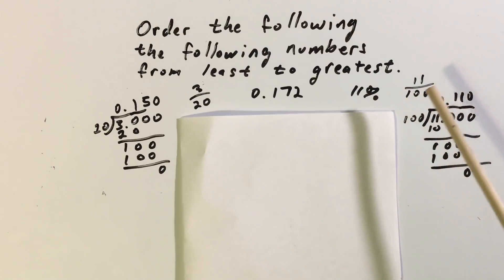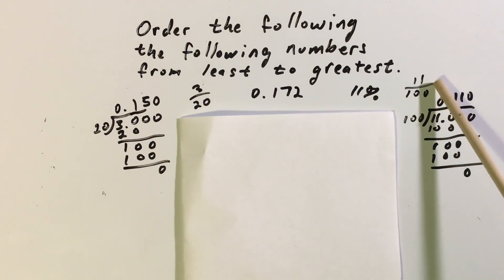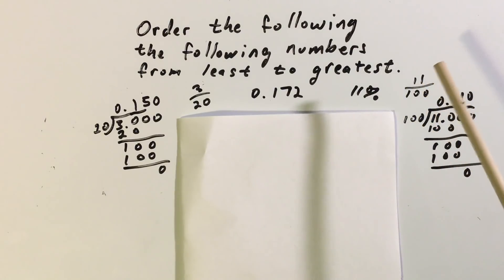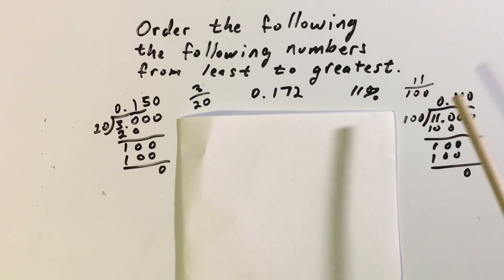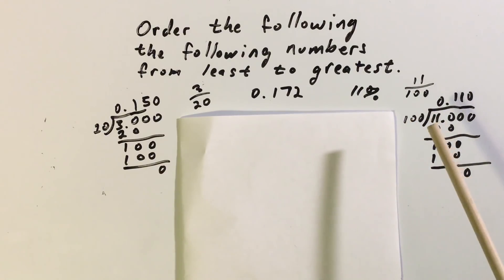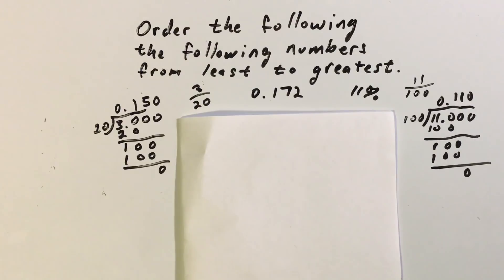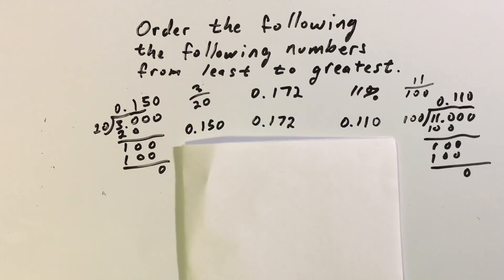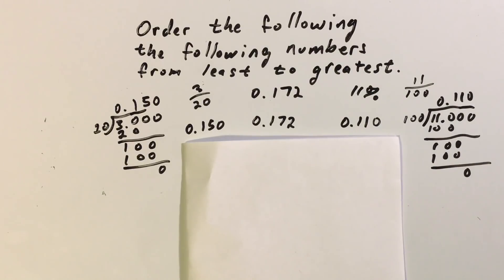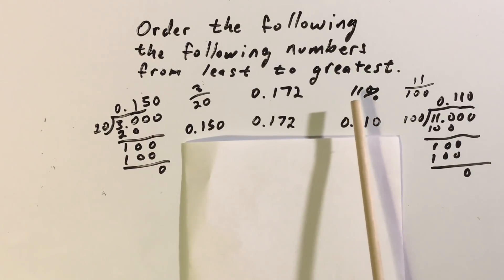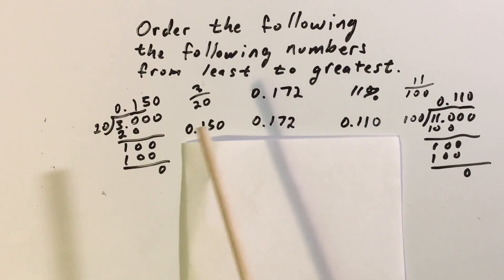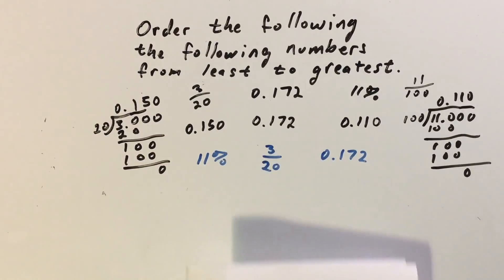For eleven percent, I had to turn it into a fraction first — eleven over a hundred — and then I did the same process: I divided the denominator into the numerator. I divided a hundred into eleven. Since it couldn't go into eleven, I added a decimal and three zeros, again going three decimal places. So three-twentieths turns into 0.150, a hundred and seventy-two thousandths stays the same as 0.172, and eleven percent turns into 0.110. The order is: eleven percent is the smallest, three-twentieths is next, and a hundred and seventy-two thousandths is the largest.